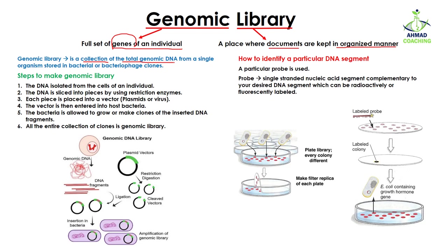The genomic library is a collection of total genomic DNA from a single organism, stored in bacterial or bacteriophage clones. If you wanted to study a particular gene, you pick that gene from the genomic library and study it — just like picking a book from a shelf. In a genomic library, genes are stored in the clones of bacteria or bacteriophage, which is actually a virus.